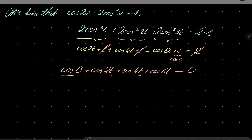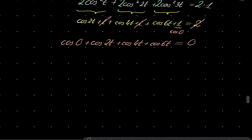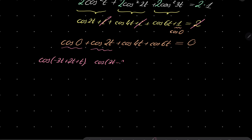Notice that here we have a sum of 4 cosines. I will try to use the second identity hinted at in the beginning. The first term, cosine of 0, is exactly the same as cosine of (-3t + 2t + t). The next term, cosine of 2t, corresponds to cosine of (3t - 2t + t).